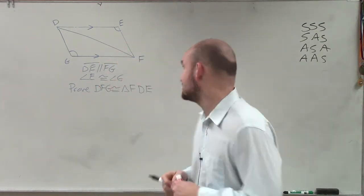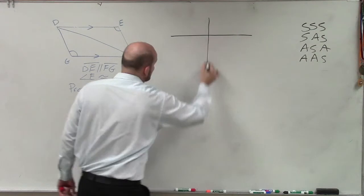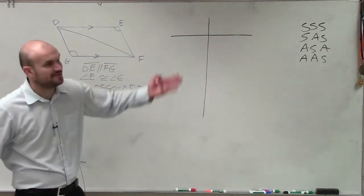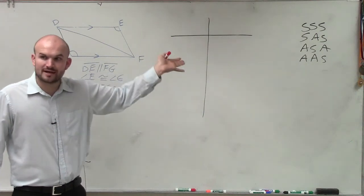So we need to look at this. And if we're going to write a statement or a proof, if we're going to prove congruence, we're going to have to make sure we have either all three sides, two sides and an angle, or two angles and a side.